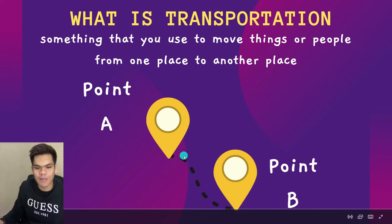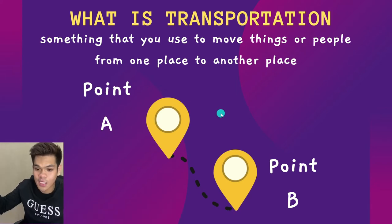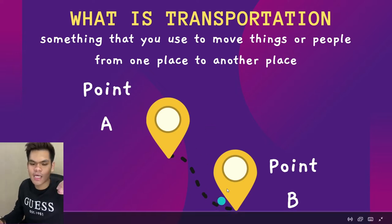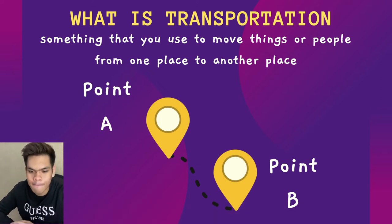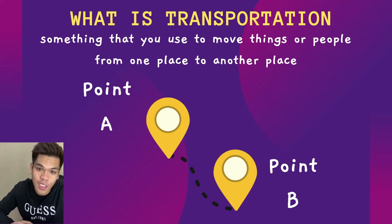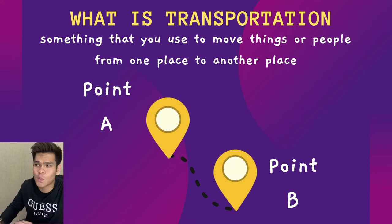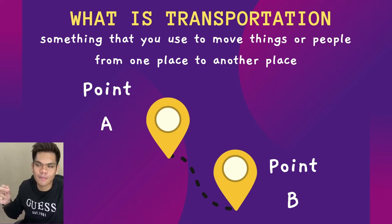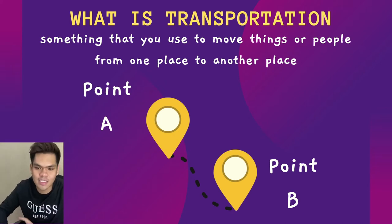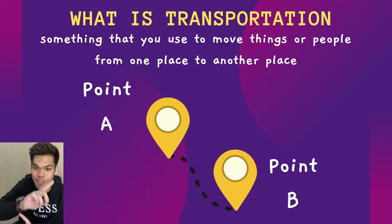Look at the picture here. Point A — let's say you're from Melaka — and Point B is Penang. The tiny dots in the middle are the route. How do you get to Penang? You need transportation so that it can take you from Point A to Point B, from Melaka to Penang. Of course you could walk, but it's very far and you wouldn't want to do that. So transportation, or in Bahasa Melayu, is 'pengangkutan'.